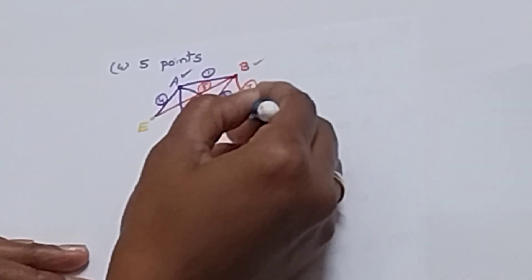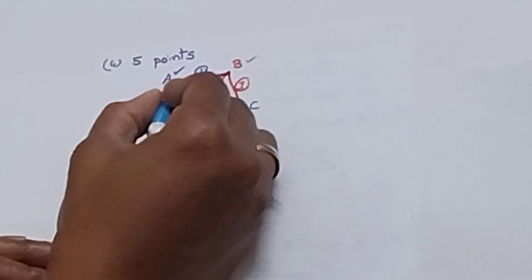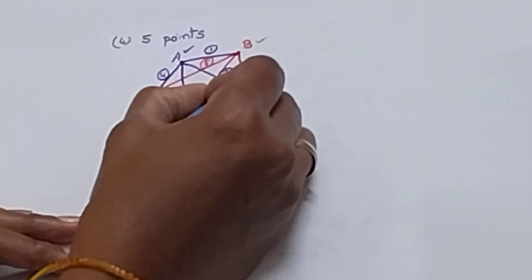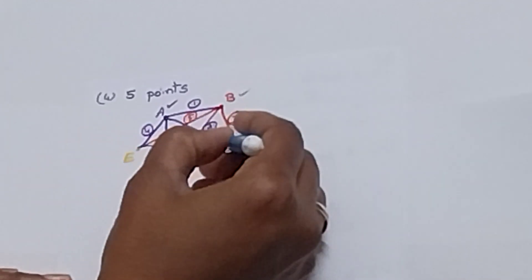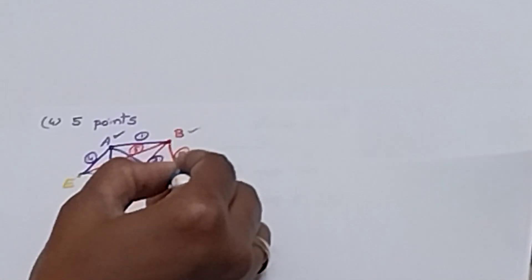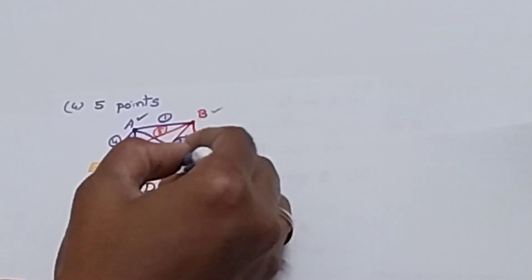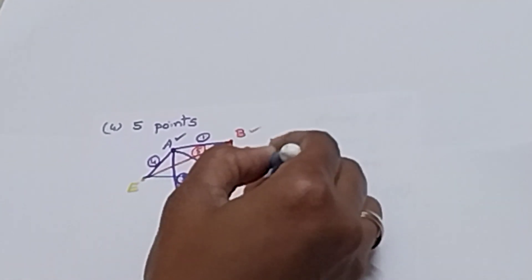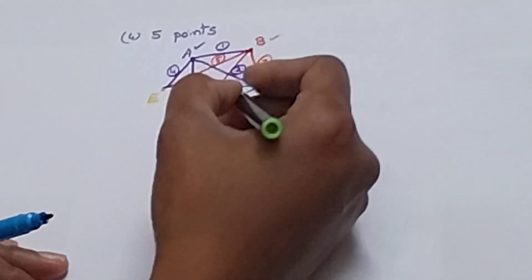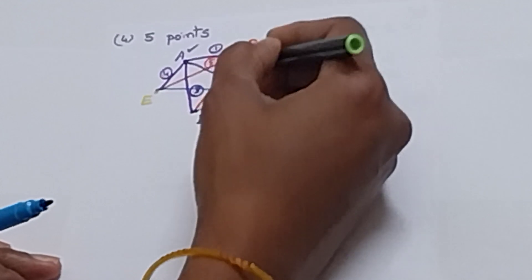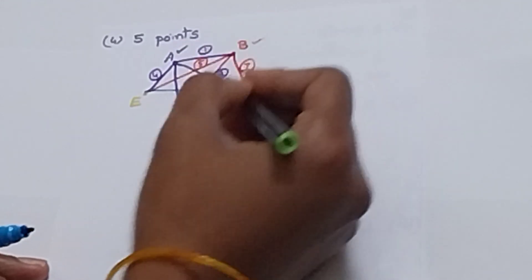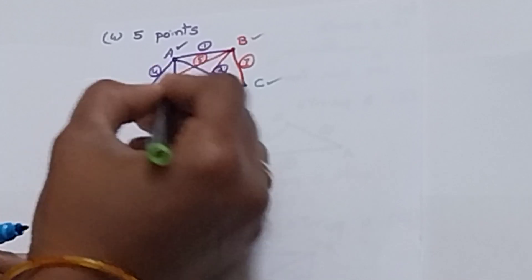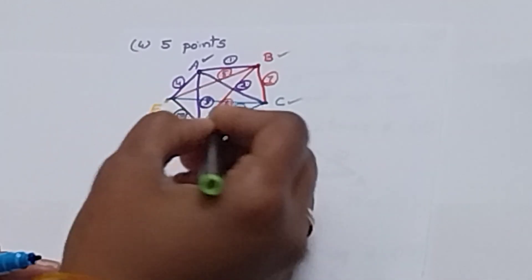Now we go to C. C to B — already connected. C to A — connected. C to E — not connected, counting it as 8th. C to D — also new, counting it as 9th. C is connected to all 4 points. C is completed. We go to D. D to C — connected. D to B — connected. D to A — connected. D to E — this is new, counting it as 10th. D is connected to all points. D is completed.